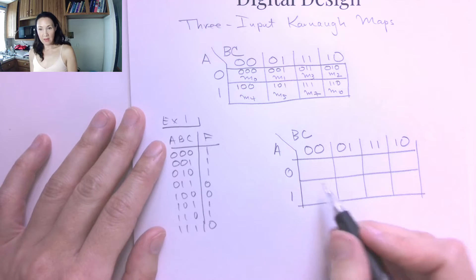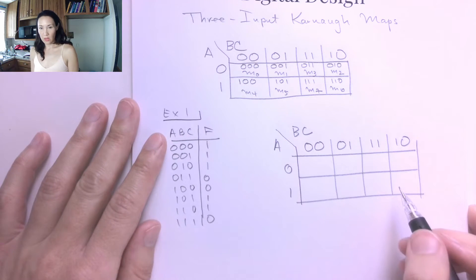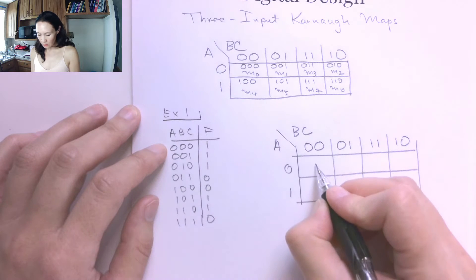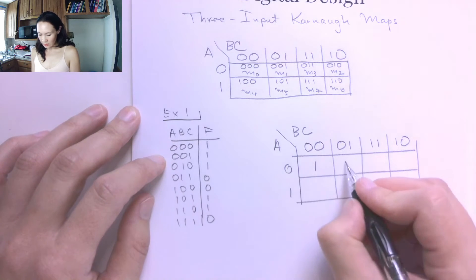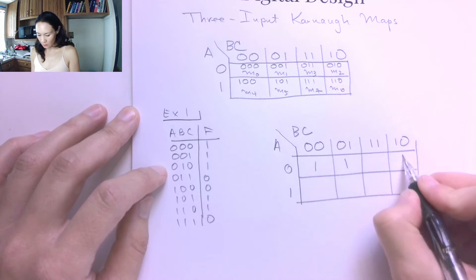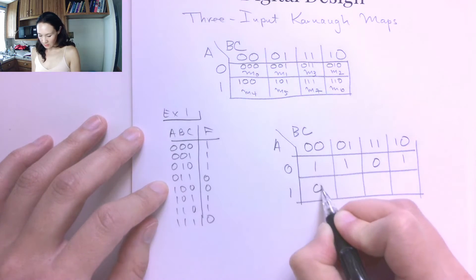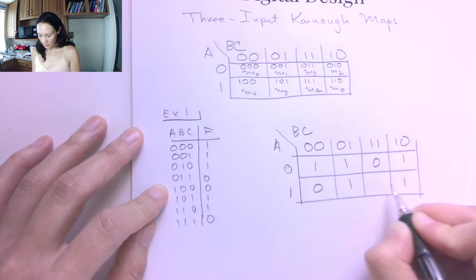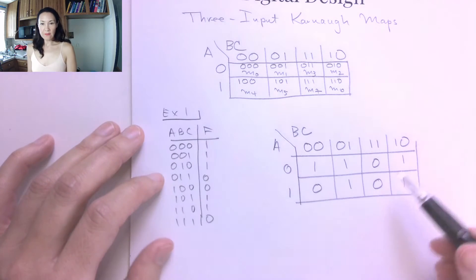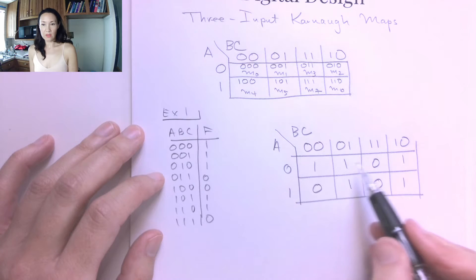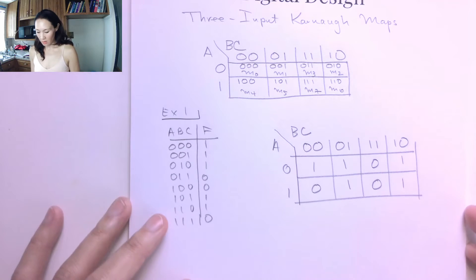I'm counting up in gray code so there's only one bit change per movement and then now I can fill in the values for F in the appropriate location in the Karnaugh map. So minterm 0 is a 1, minterm 1 is a 1, minterm 2 is a 1, minterm 3 is a 0. Then we have a 0, we have a 1, 1, 0. Okay, great. So we have the values for F are in the appropriate location in our Karnaugh map.